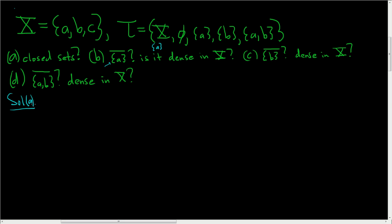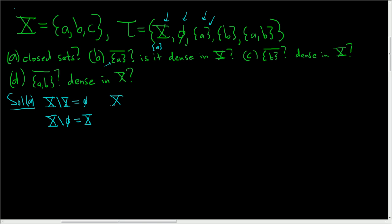Solution to A. To find the closed sets, all we have to do is take the complement of each open set in tau. Starting with the first one: X set minus X is simply the empty set — that's our first closed set. Then X set minus the empty set is simply X, so that's our second closed set. Next, X set minus {A} gives all elements in X except A, so just B and C — the set containing B and C.